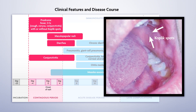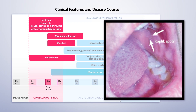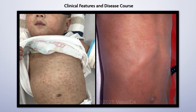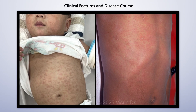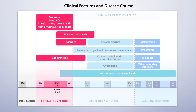The erythematous maculopapular rash characteristic of measles appears two to four days after the onset of fever, typically starting on the face and proceeding to the trunk, arms, and legs. Patients are contagious for about four days before and four days after the eruption of the rash. Any child presenting with a fever and rash should prompt consideration of measles.